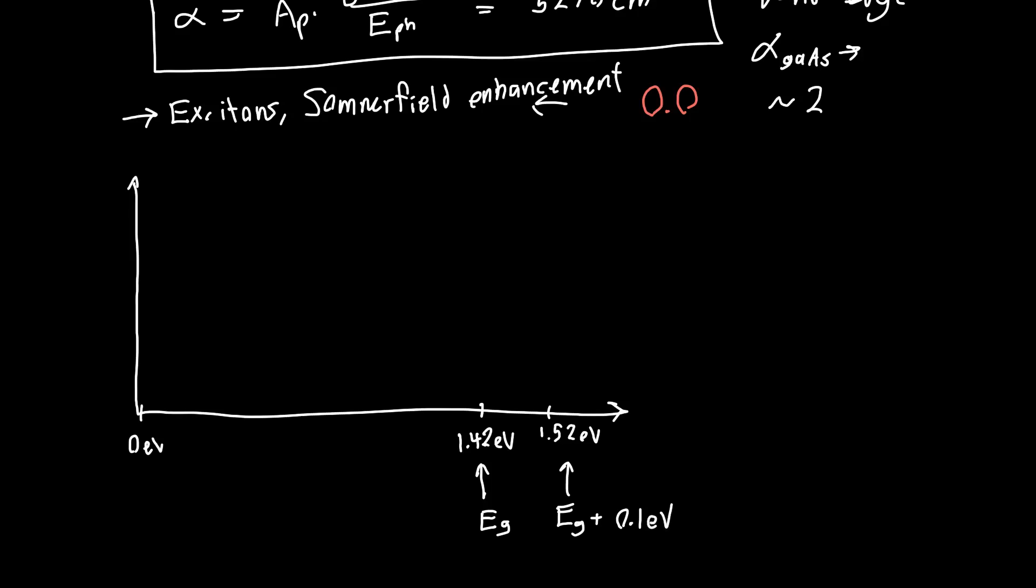So we know at the band gap plus 0.1 eV, we know the value, it's 5270 inverse centimeters. So we can just draw a point that corresponds to that location.